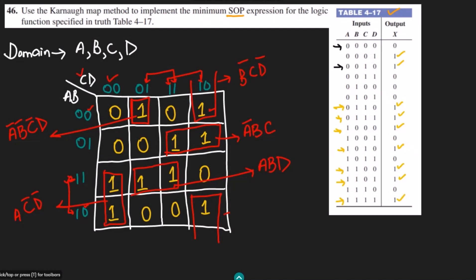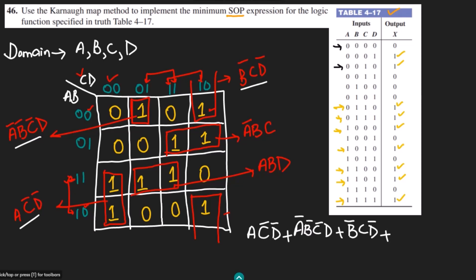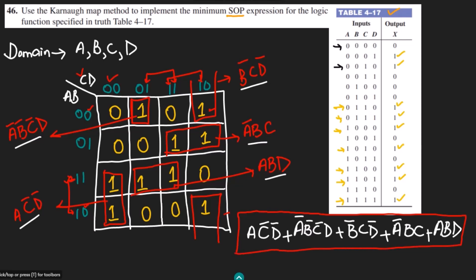Now writing all the terms as the minimized sum of products expression. The final minimized SOP expression is: AC'D' + A'B'C'D + B'CD' + A'BC + ABD. This is the minimized sum of products expression we were asked to find from this question.